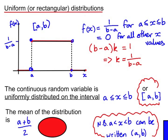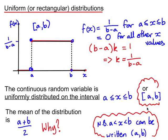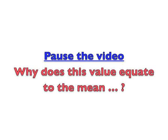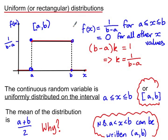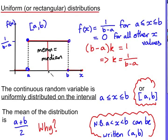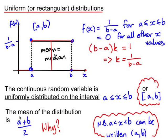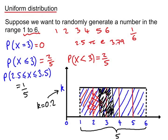The mean of the distribution is (a + b) / 2. A uniform or rectangular distribution is symmetrical, and in a symmetrical distribution the mean equals the median, so the mean is halfway through the distribution, calculated as (a + b) / 2. In the example at the beginning of this lesson, a = 1 and b = 6, so the mean is (1 + 6) / 2 = 3.5, which sits right in the middle of the rectangle.